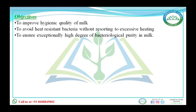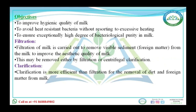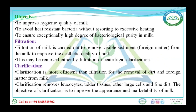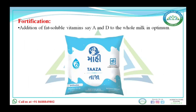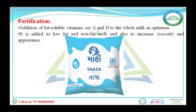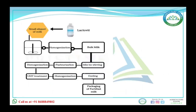The objectives of bactofugation are to obtain hygienic quality milk, avoid heat-resistant bacteria, and maintain milk purity. Filtration removes visible sediment or foreign material from milk. Clarification is more efficient than filtration — it removes dirt and foreign material using centrifugal force, including leukocytes, other tissue cells, and fine dust, mainly to improve appearance and marketability. Fortification involves adding fat-soluble vitamins like vitamin A and D to whole milk, and is generally applied to low-fat or non-fat milk to increase viscosity and appearance.